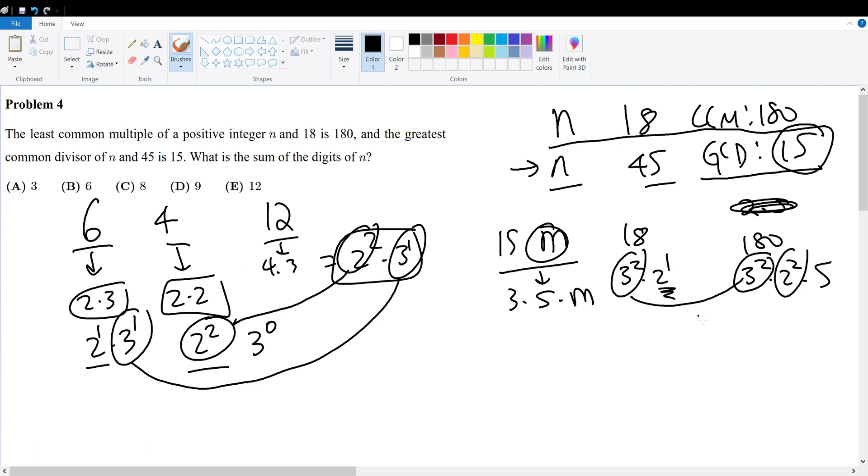So it cannot be derived from 18. It must be from the quantity 15 times m. That means if we have no 2s here, but we must have a power of 2 squared, then m must be 2 squared in order to satisfy this prime factorization.